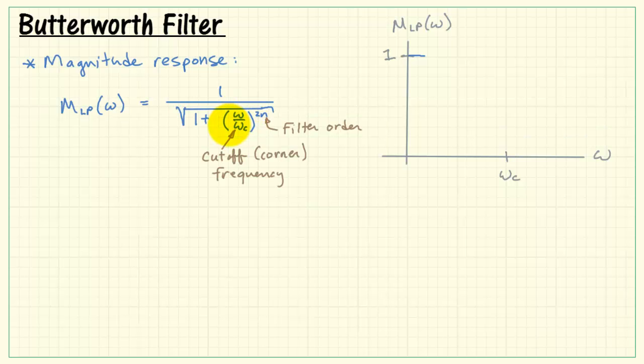Next, if we have omega being equal to the cutoff frequency exactly, that places us right here on the graph. For this case, we see 1 divided by square root of 1 plus 1 to the 2n, and that's always 1 no matter the value n. That gives us 1 divided by square root of 2, which is approximately equal to 0.707. That value is right about here, and the response starts to fall off and then pass through that value.